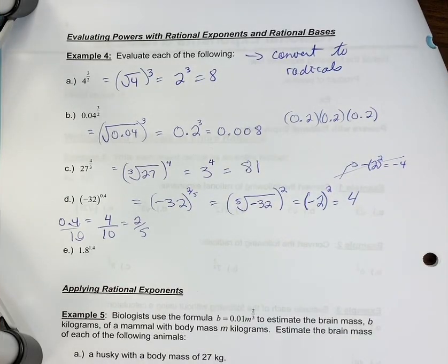Example 4e is just showing that sometimes you can use your calculator if you want to evaluate some questions with decimals. So if you have 1.8, that's not going to be a perfect square, cube, or whatnot.